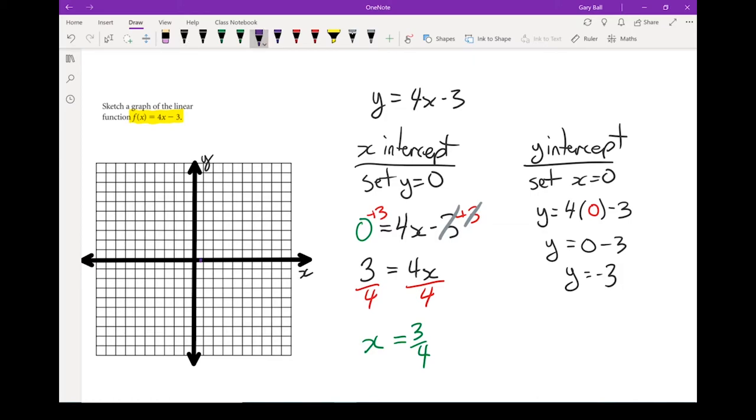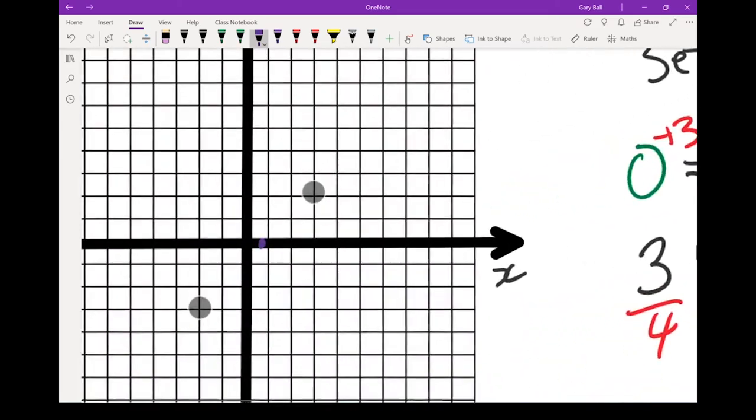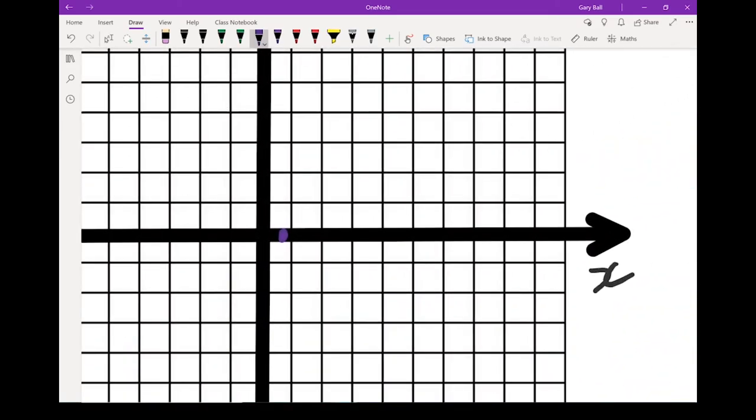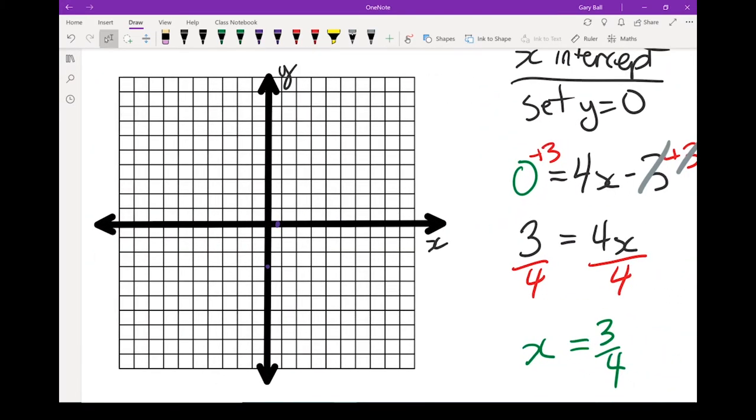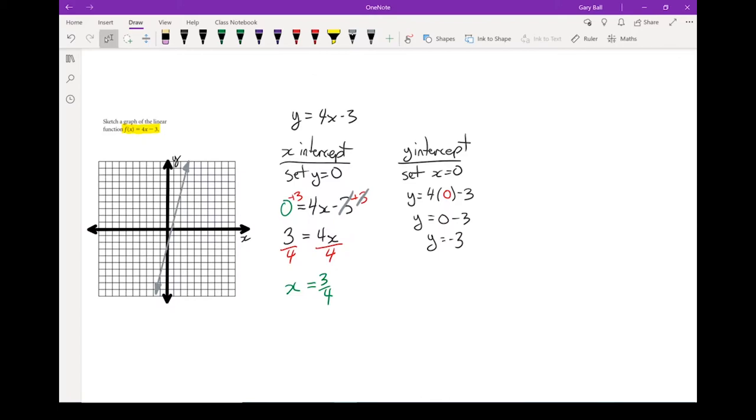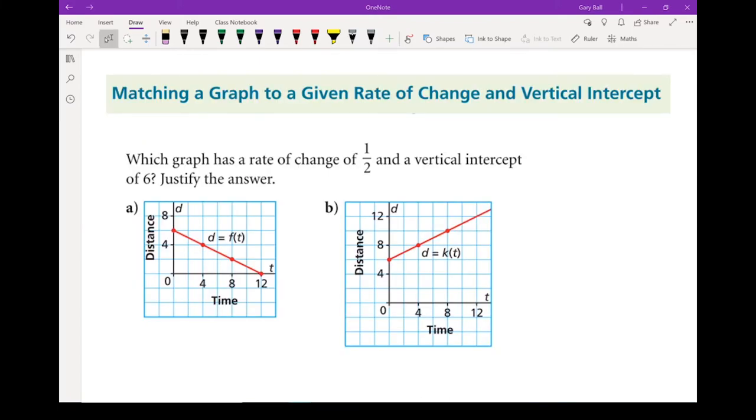All right. Let's mark minus 3 on the y-axis. Zoom in a little bit. 1, 2, 3. There's my point right there. Let's graph it. And there is my graph of my line.